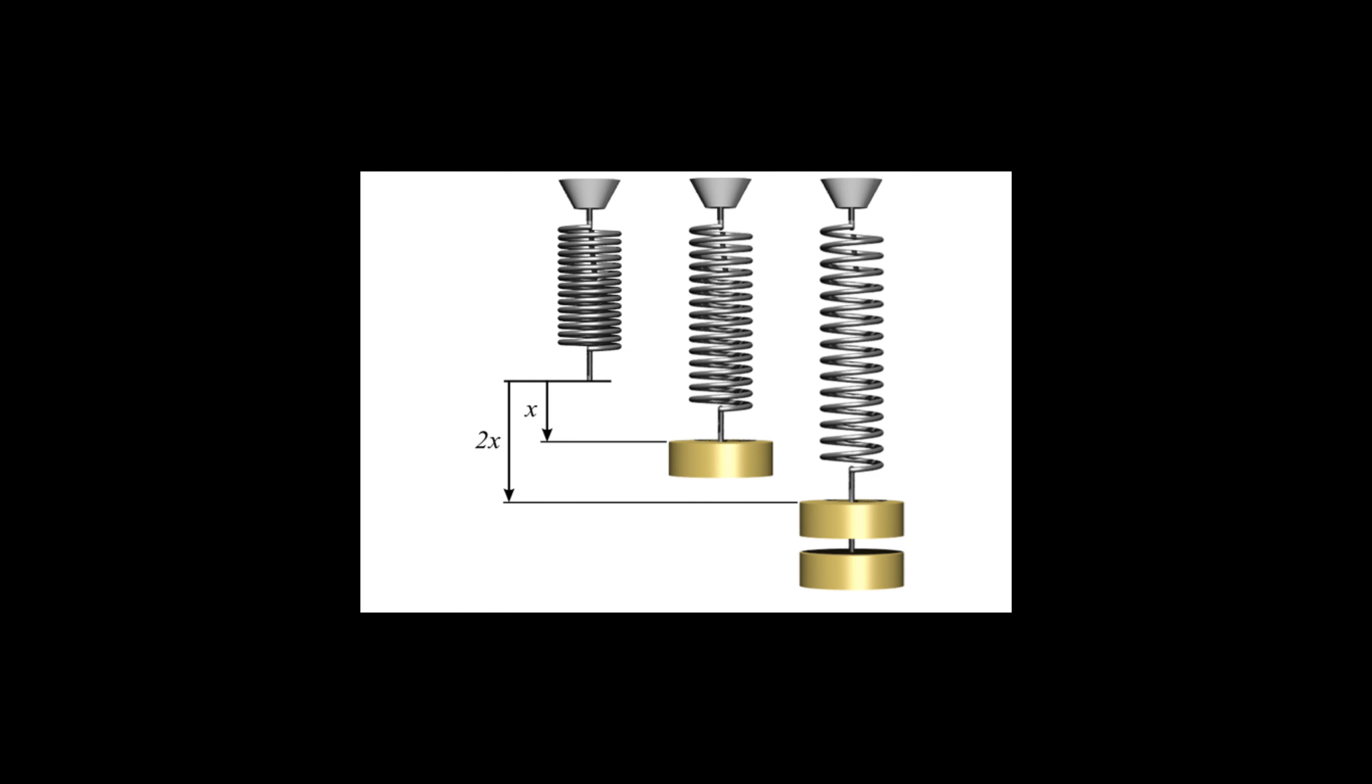Generally, a spring can be very closely approximated in its behavior to something called Hooke's Law which says that the amount that a spring will be extended is directly proportional to the force with which it's been pulled. So when you attach two masses to a spring of equal mass, it stretches it twice as far as just one of them.